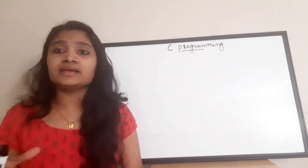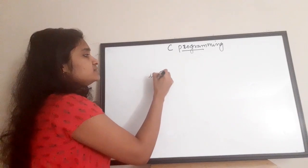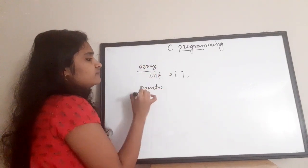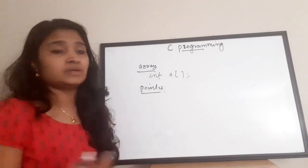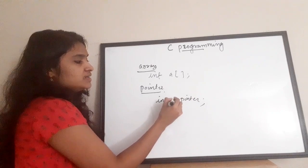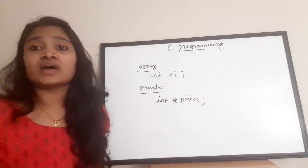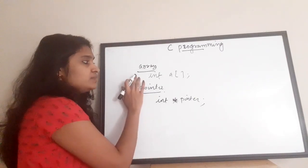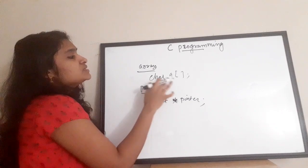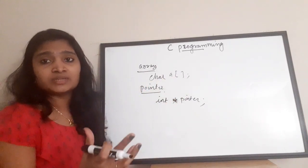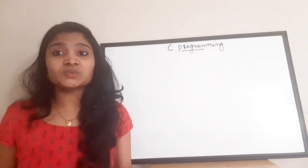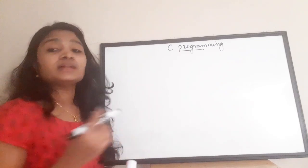The next question is: what is the difference between an array and a pointer? An array is a collection of similar data types — for example, 'int a[]' is an array of integer values. A pointer is a variable that stores the address of another variable — for example, 'int *pointer'. The difference is: array stores a collection of similar data types, while a pointer stores the address of another variable.